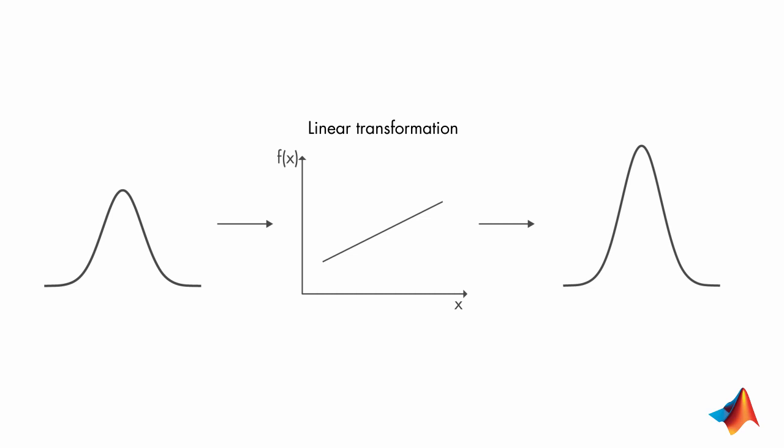the distribution maintains its Gaussian property. Although it's not shown here, the same is true for the measurement function g. However, if f is nonlinear, then the resulting state distribution may not be Gaussian. And therefore, the Kalman filter algorithm may not converge.